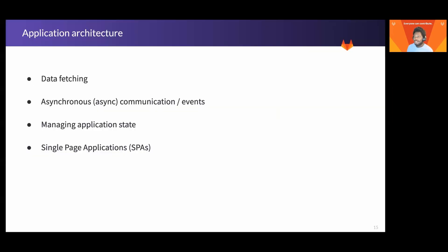One key area of concern for front-end engineers building any application of considerable size is ensuring they're building a sound and extensible application structure. The architecture of an application can have drastic effects on how maintainable it is—such as fixing bugs and adding new features—how easy it is to bring on new team members, and also generally how well the application performs. There are lots of areas related to front-end architecture, but managing application state, fetching data, and handling asynchronous effects are all key aspects a front-end engineer needs to consider.